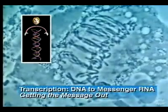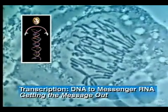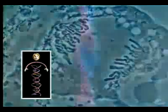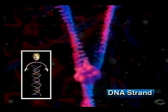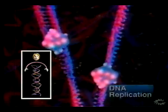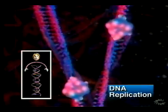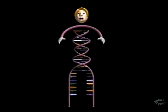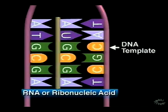Every somatic cell of an organism has an exact copy of the deoxyribonucleic acid, or DNA strands, that codes for the genotype of that organism. In another program, you saw DNA replicate and form identical daughter strands ready to separate during cell division. In this program, you'll see DNA uncoil at one segment or gene. Each segment or gene is used as a template for the transcription of a strand of RNA, or ribonucleic acid.